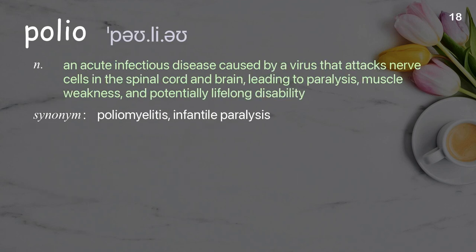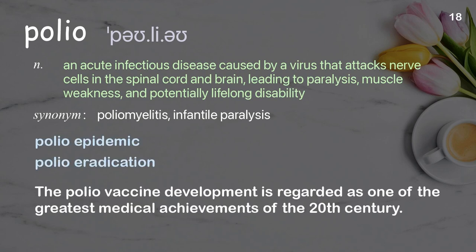Polio: an acute infectious disease caused by a virus that attacks nerve cells in the spinal cord and brain, leading to paralysis, muscle weakness, and potentially lifelong disability. Examples: polio epidemic, polio eradication. The polio vaccine development is regarded as one of the greatest medical achievements of the 20th century.